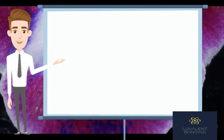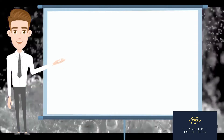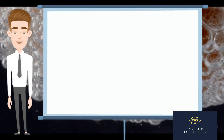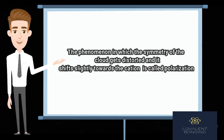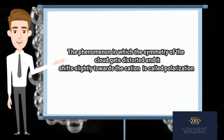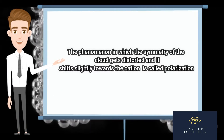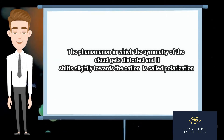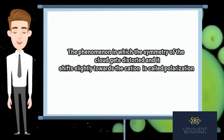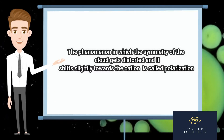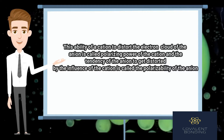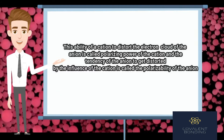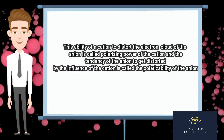Ionic bonds are associated with some covalent character due to the attractive forces acting between the cation and the electron cloud of the anion. During the formation of an ionic compound, when a cation and anion approach each other, the nucleus of the cation exerts some attractive force on the electron cloud. As a result, the symmetry of the electron cloud gets distorted and shifts slightly towards the cation. This phenomenon is called polarization. This ability of a cation to distort the electron cloud of the anion is called the polarizing power of the cation, and the tendency of the anion to get distorted is called the polarizability of the anion.